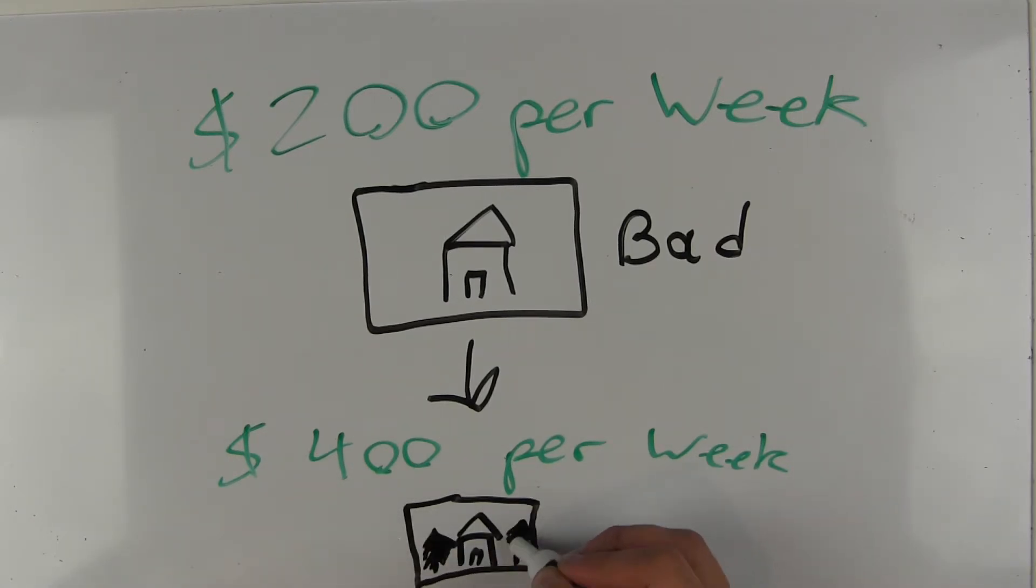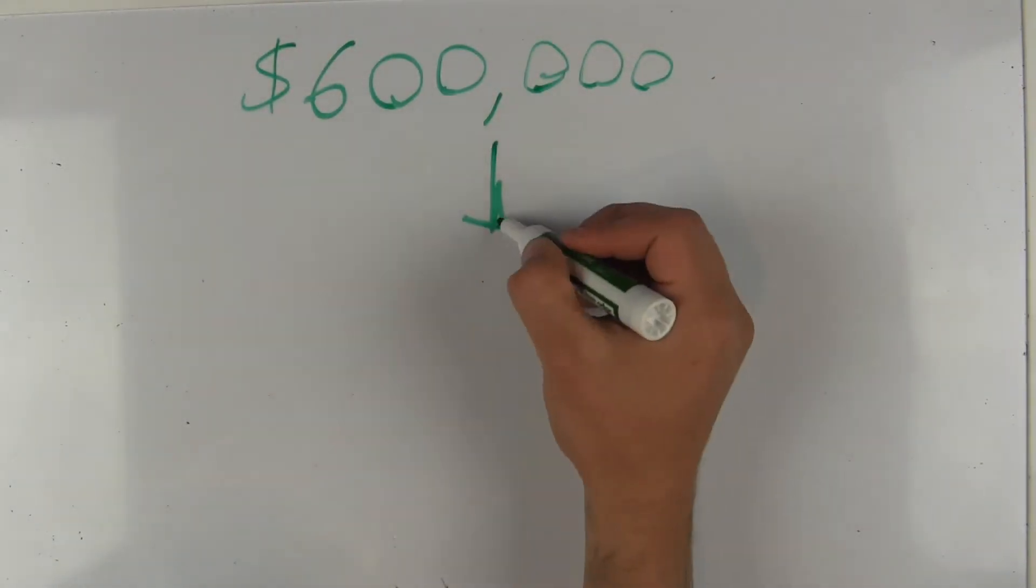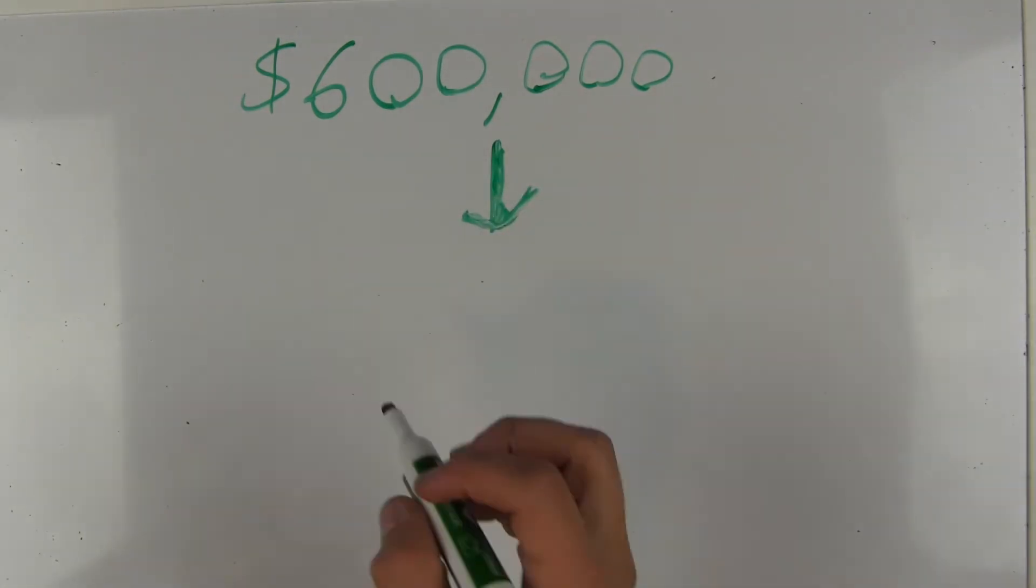After changing all the pictures on their site, they realized that the company was now making about $400 per week and it was growing. This turned out to be the key to convincing people that the Airbnb system was safe and a great idea.